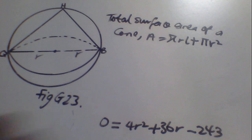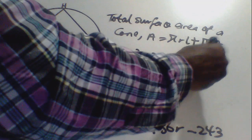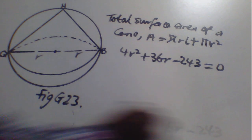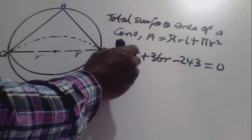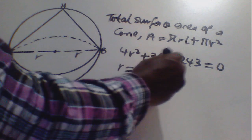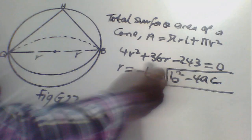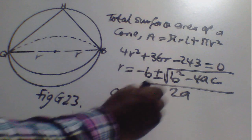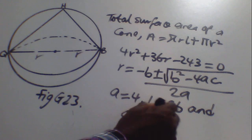We solve the quadratic equation 4R² plus 36R minus 243 equals 0 using the general quadratic formula: R equals (-B ± √(B² - 4AC)) / 2A, where A equals 4, B equals 36, and C equals -243.